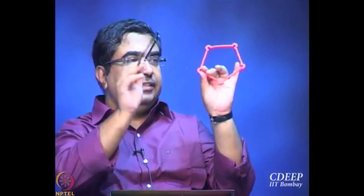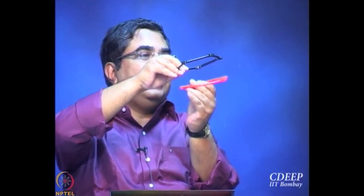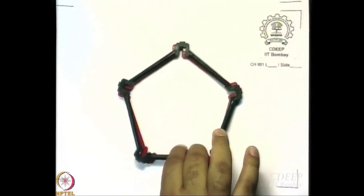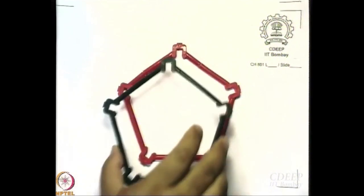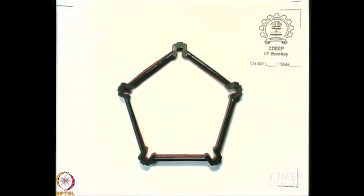We closed the discussion last day with ferrocene. Let us start with the eclipsed configuration. Eclipse is very easy. These are the two rings — one on the top, one on the bottom. That is the structure of ferrocene when it is eclipsed. This is the eclipsed structure; you do not even see the red ring because we have the black ring on the top. We have already identified the symmetry operations. What are they? What is the highest order axis? C5.